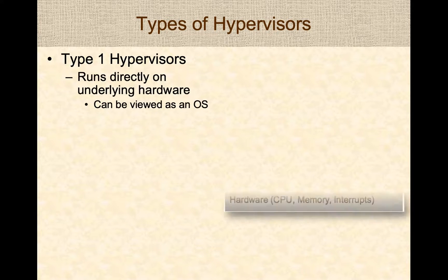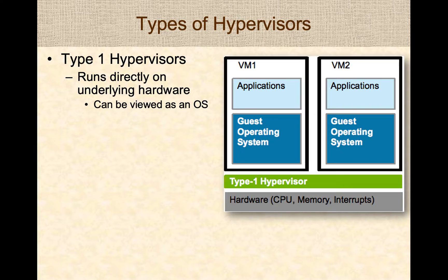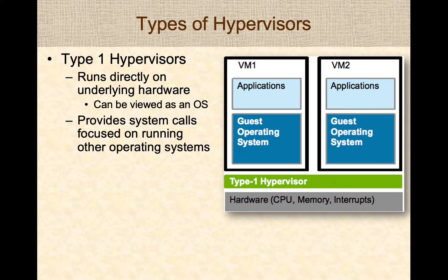Type 1 Hypervisors run directly on the underlying hardware — in industry lingo, they run on bare metal, where metal refers to the metal enclosures used on computers. Type 1 Hypervisors can be thought of as the native operating system that actually runs on top of the computer. They do not provide a lot of the generic system calls that a common desktop operating system might provide, because their primary job is to run other operating systems — called guest operating systems — in virtual machines.